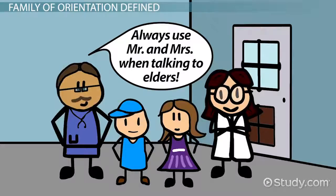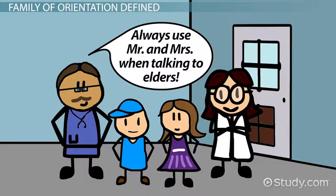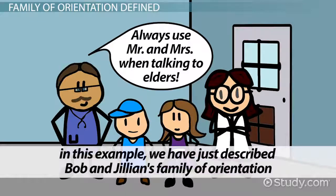Once Bob became an adult and married his wife Susan, they taught the same values to their three children. In this example, we have just described Bob and Jillian's family of orientation.